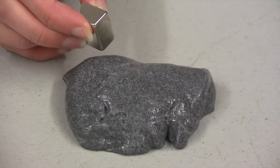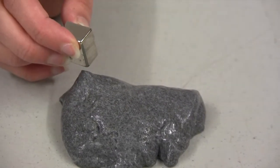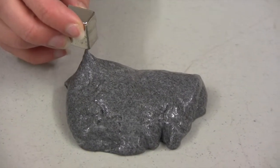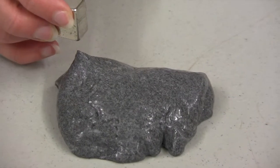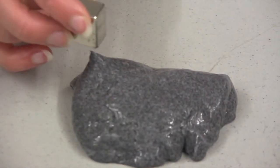So what makes the polymer magnetic is the iron oxide suspended inside of it. When you put the neodymium magnet close to it, the iron oxide pulls to the magnet. And since the polymer is stretchy, it comes along with it.